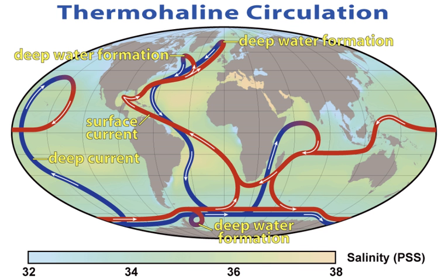Oceanic heat content refers to the heat stored in the ocean. The changes in the ocean heat play an important role in sea level rise, because of thermal expansion. Ocean warming accounts for 90% of the energy accumulation from global warming between 1971 and 2010.